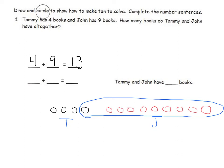My new number sentence is now 10 plus 3 equals 13. So I will write that in: 10 plus 3 makes 13. Tammy and John have 13 books altogether. 4 plus 9 equals 13, and that is equal to the value of 10 plus 3, which makes 13.